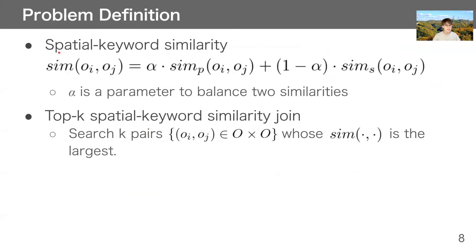Here is spatial keyword similarity, sim. It is weighted summation of simp and sims. Alpha is a parameter to balance two similarities. When alpha is large, simp, spatial similarity is more important. On the other hand, when alpha is small, sims, keyword set similarity is more important.